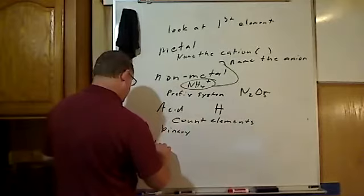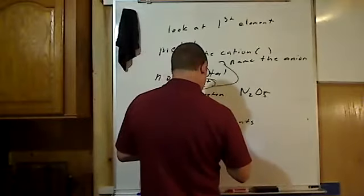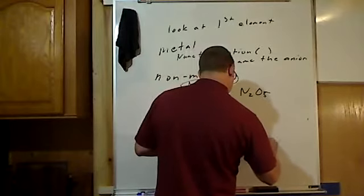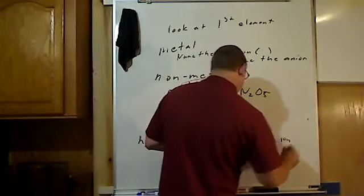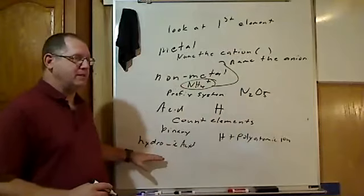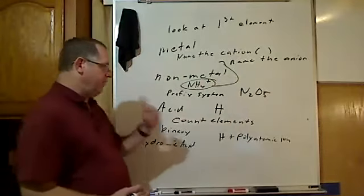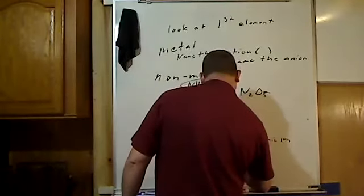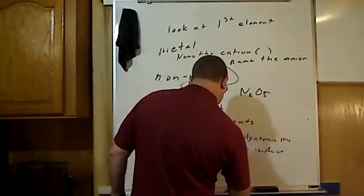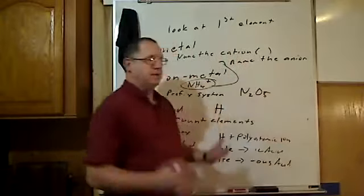We're going to name it hydroic acid. If it's ternary or more, it's going to be H plus the polyatomic ion. In this case we are not going to use hydro. Hydro is for a binary system, not for using polyatomic ions. If the polyatomic ion ends in -ate, we change the ending to -ic. If it ends in -ite, we change it to -ous acid.